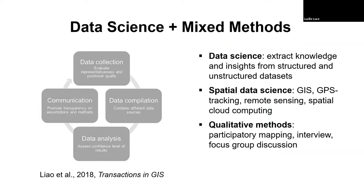On methods: I use data science and mixed methods to answer questions about environmental sustainability and synergistic outcomes in human well-being. This especially includes spatial data science methods such as GPS tracking, GIS, remote sensing, and spatial cloud computing. I also do qualitative work — going to communities to do participatory mapping, interviews, and focus group discussions with smallholder farmers and herders to triangulate knowledge from more quantitative methods.